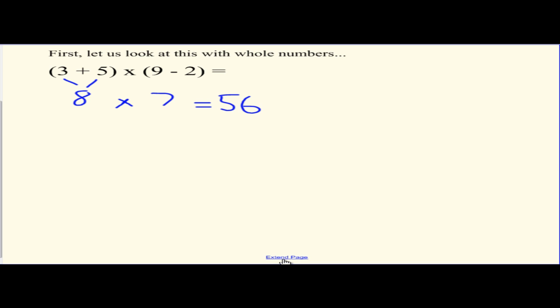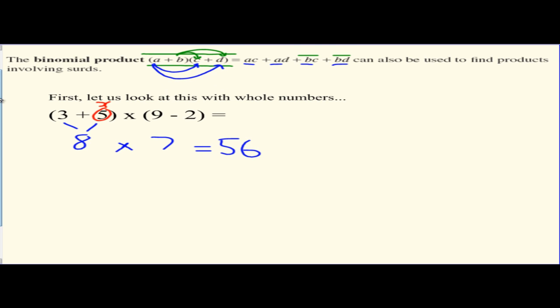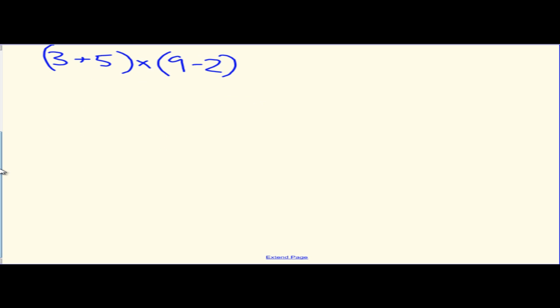But what happens if this 5 is actually an X? And you don't know what that is. That makes it a little more difficult. So, we're going to keep them as whole numbers, and we're going to solve it using the method above. So, using our binomial product. Alright, let's rewrite it down here. We're going to have 3 and the 5 multiplied by the 9 minus the 2.